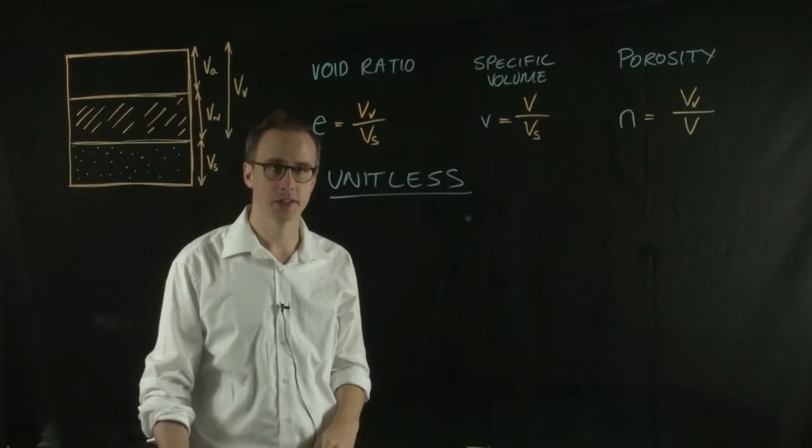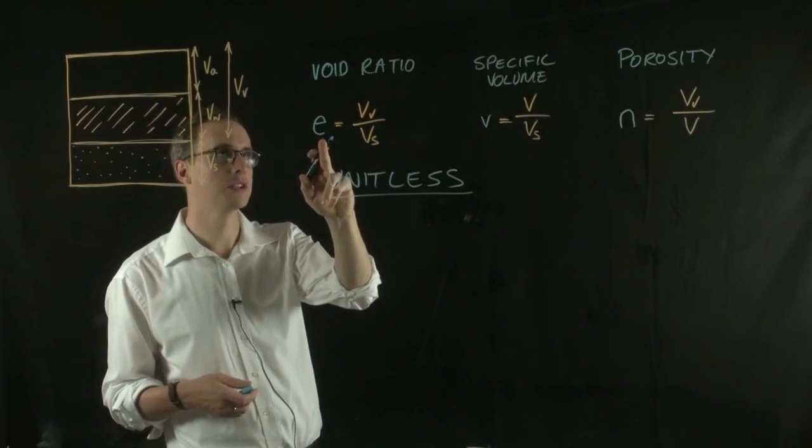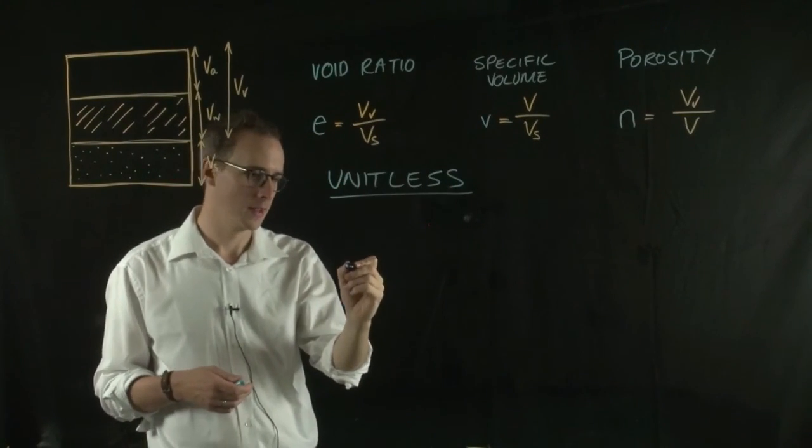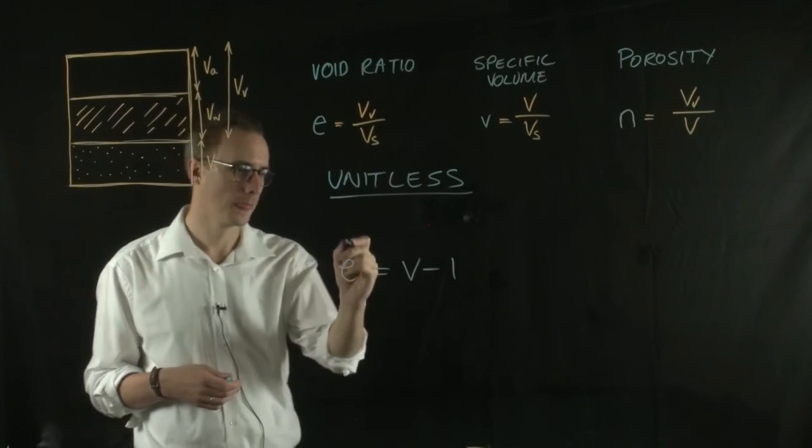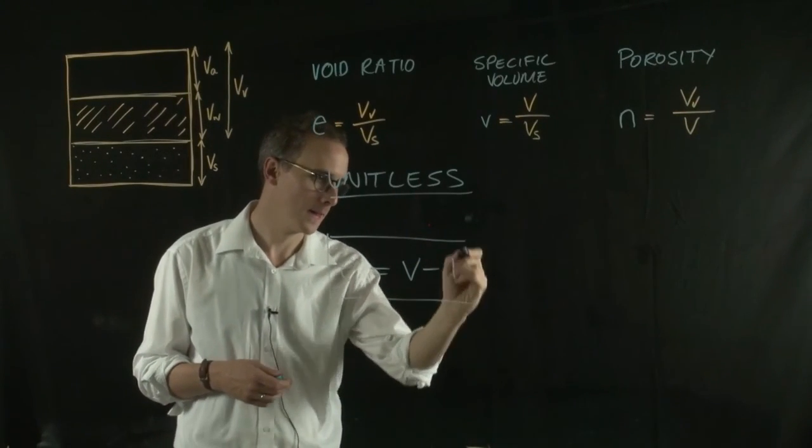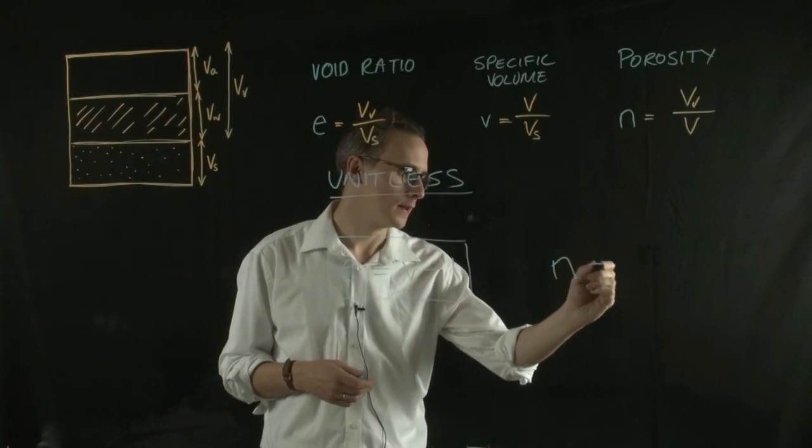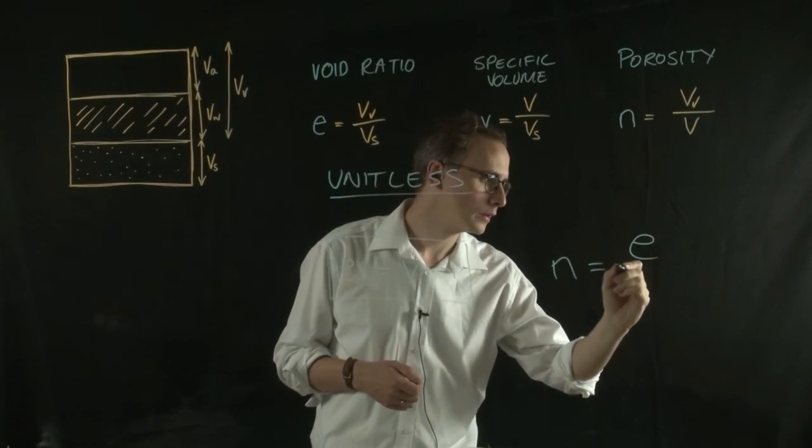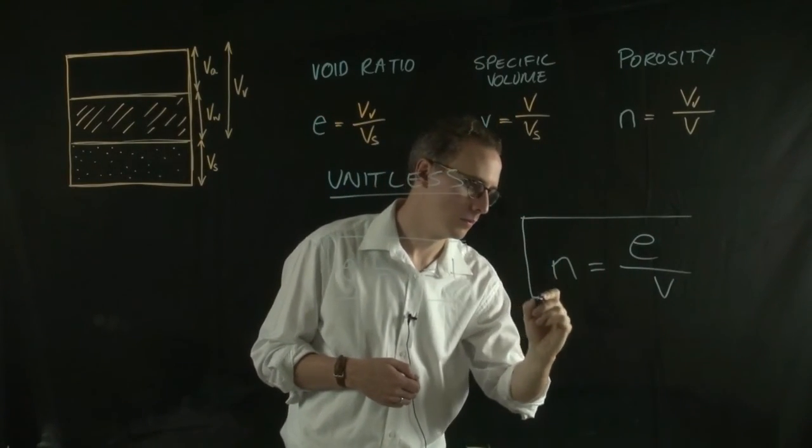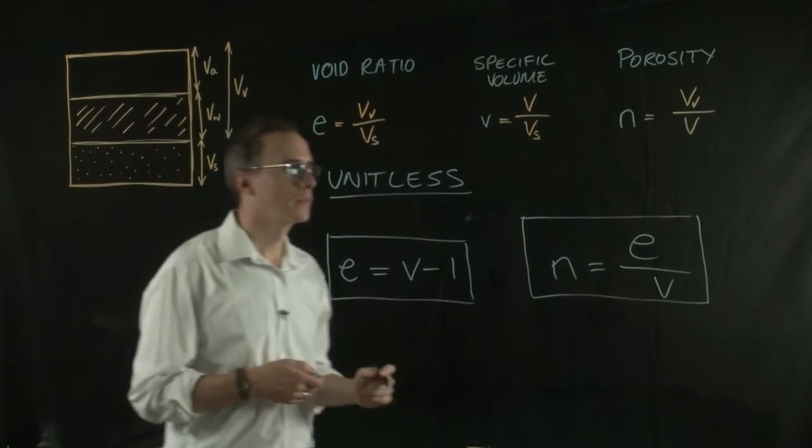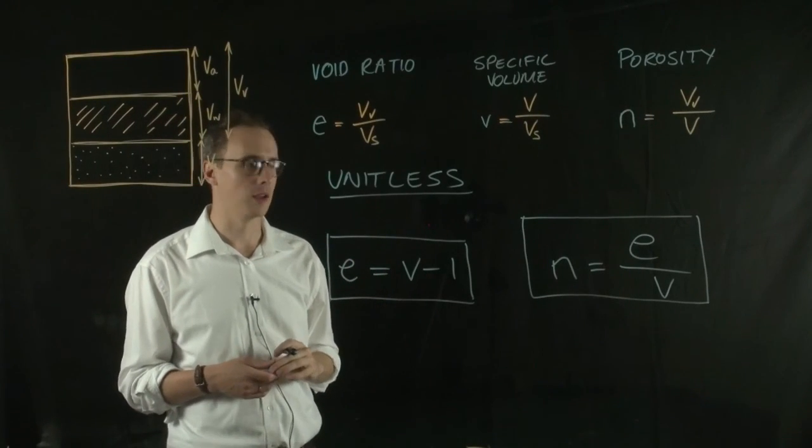They all relate to each other through two equations. The relationship between the void ratio and the specific volume is this: the void ratio is equal to the specific volume minus one. And the porosity is equal to the void ratio divided by the specific volume. That really means that if we have one of these parameters, we can figure out what the other two are.